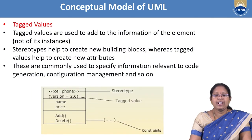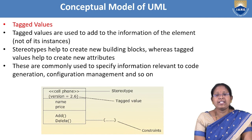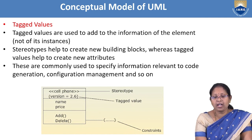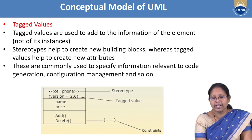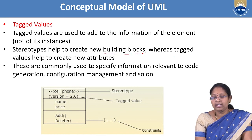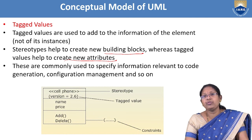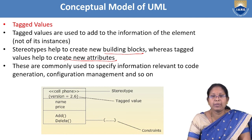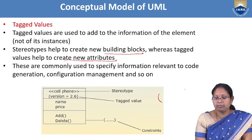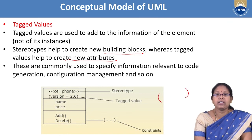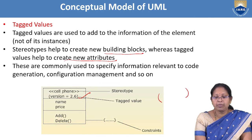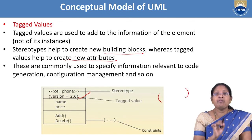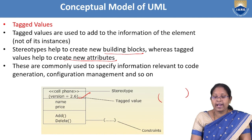Tagged values are extensibility mechanisms that extend the properties of things by creating new attributes. They are represented using parentheses. For example, a class name followed by a version number in parentheses is an example of a tagged value.